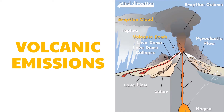If magma is thick and sticky, gases cannot escape easily. Pressure builds up until the gases escape violently and explode. This type of magma blasts up into the air and breaks apart into pieces called tephra. Tephra can range in size from tiny particles of ash to house-sized boulders, and it destroys everything in its path.